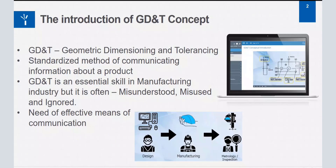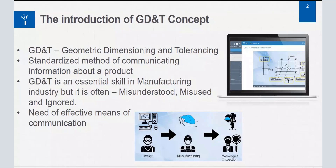GD&T covers the process from design through manufacturing to the metrology or inspection department, and that's why it is an essential skill in the manufacturing industry. A designer designs parts or components, and that theoretical design has to be manufactured in reality with the help of manufacturing people. They are supposed to understand the design intent from the designer, and finally inspectors from the metrology department check the manufactured component as per the design specification.